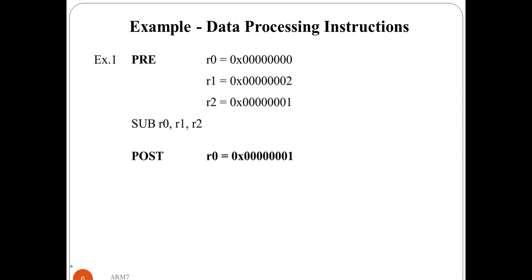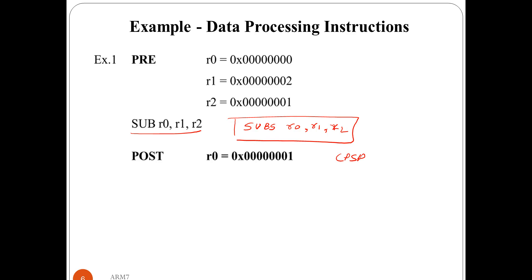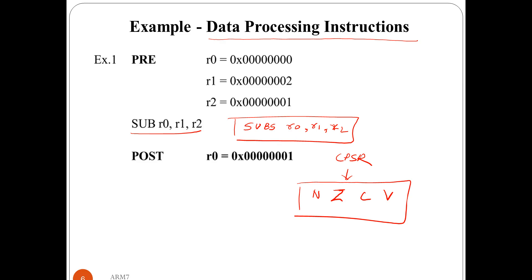There is one more important concept: if we append S to an instruction, for example 'SUBS R0, R1, R2', then the CPSR register will be updated. Inside the CPSR register we have the N, Z, C, and V flag bits. These flag bits are updated after execution. These are the arithmetic instructions inside data processing instructions; in the next tutorial we'll see the remaining instructions. Thank you.